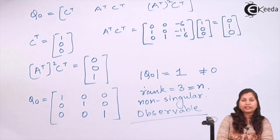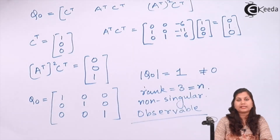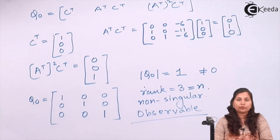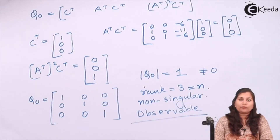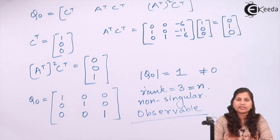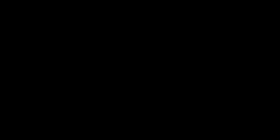So if the rank of the Qc and Q₀ matrices equals the number of state variables, then the system is said to be completely controllable and observable. Here we have checked the controllability and observability of a system whose transfer function was given to us. I hope this problem is clear to you, thank you.